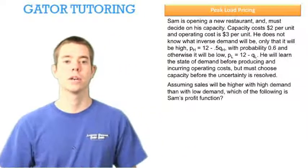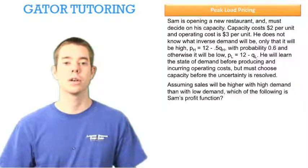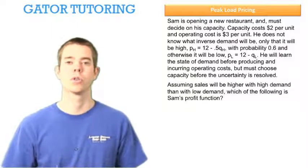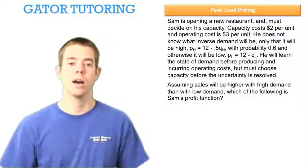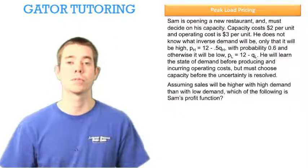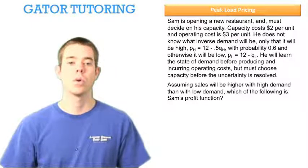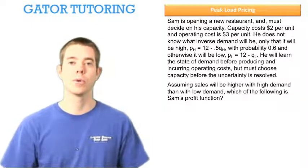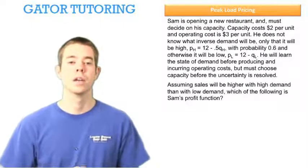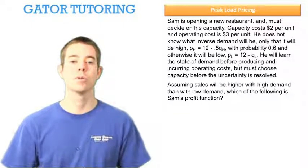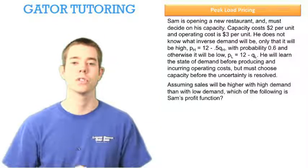Sam is opening a new restaurant and must decide on his capacity. Capacity costs $2 per unit, and operating cost is $3 per unit. He doesn't know what inverse demand will be, only that it will be high, P_H = 12 - 0.5Q_H, with 60% probability, and otherwise it will be low, P_L = 12 - Q_L, with 40% probability. He will learn the state of demand before producing and incurring operating costs, but must choose capacity before the uncertainty is resolved.